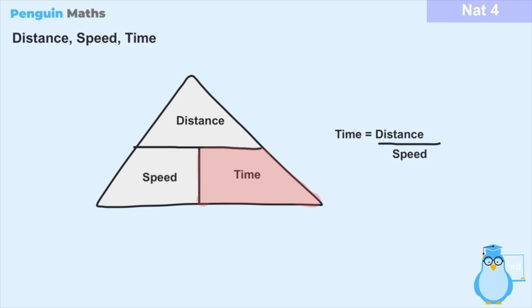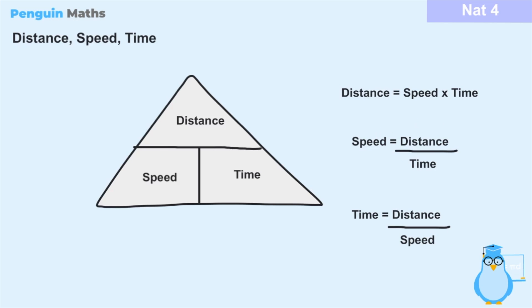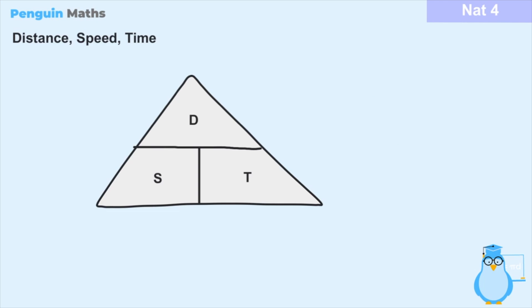Finally, for the last variable — time — we're left with distance on top and speed on the bottom, so the formula for time is: time equals distance divided by speed. To remember all three relationships, we just need to remember this triangle with distance on top and both speed and time on the bottom. Sometimes each variable is shortened to its first letter: D for distance on top, S for speed, and T for time.